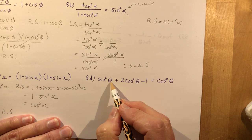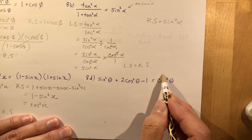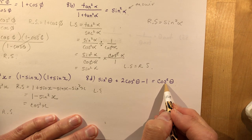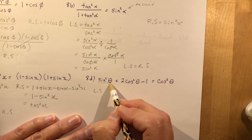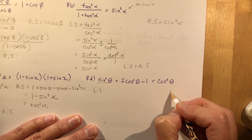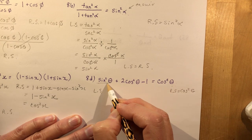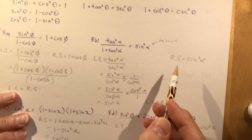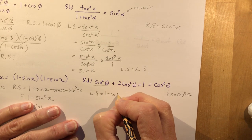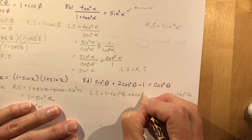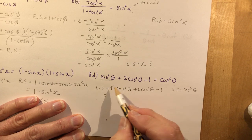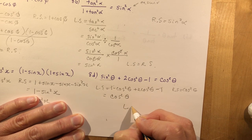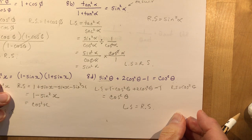Next is 8d: sin squared theta plus 2 cos squared theta minus 1 equals cos squared theta. The right side is obviously the easier side, so I work with the left. I need to eliminate the sine squared, so I replace sin squared theta using the identity sin squared theta equals 1 minus cos squared theta. That gives (1 minus cos squared theta) plus 2 cos squared theta minus 1. The ones cancel, and 2 cos squared theta minus cos squared theta gives cos squared theta. Left side equals right side — it looked more complicated than it really was.